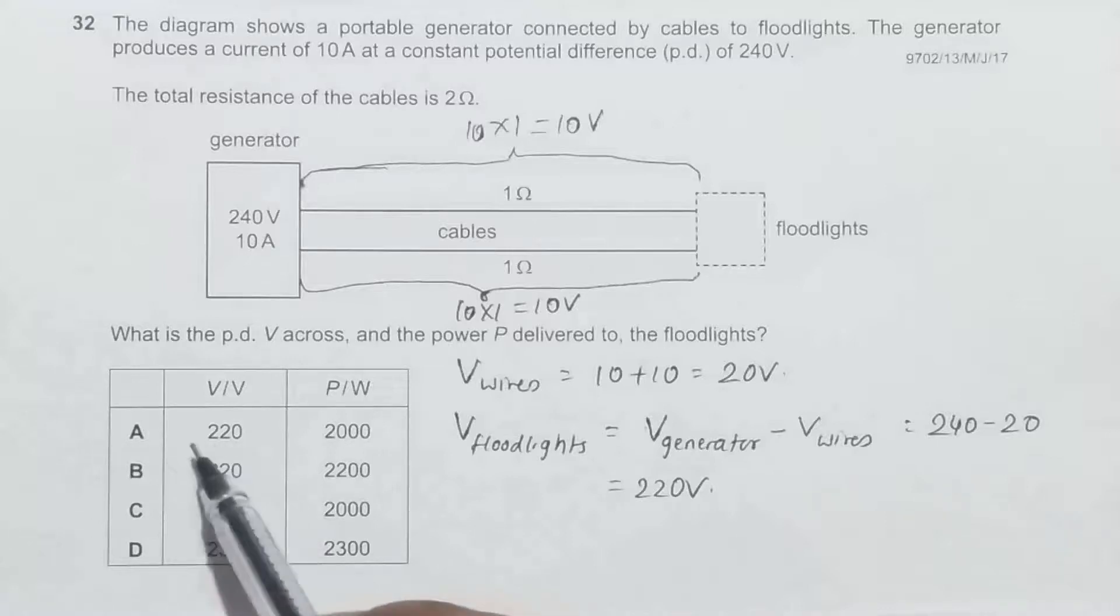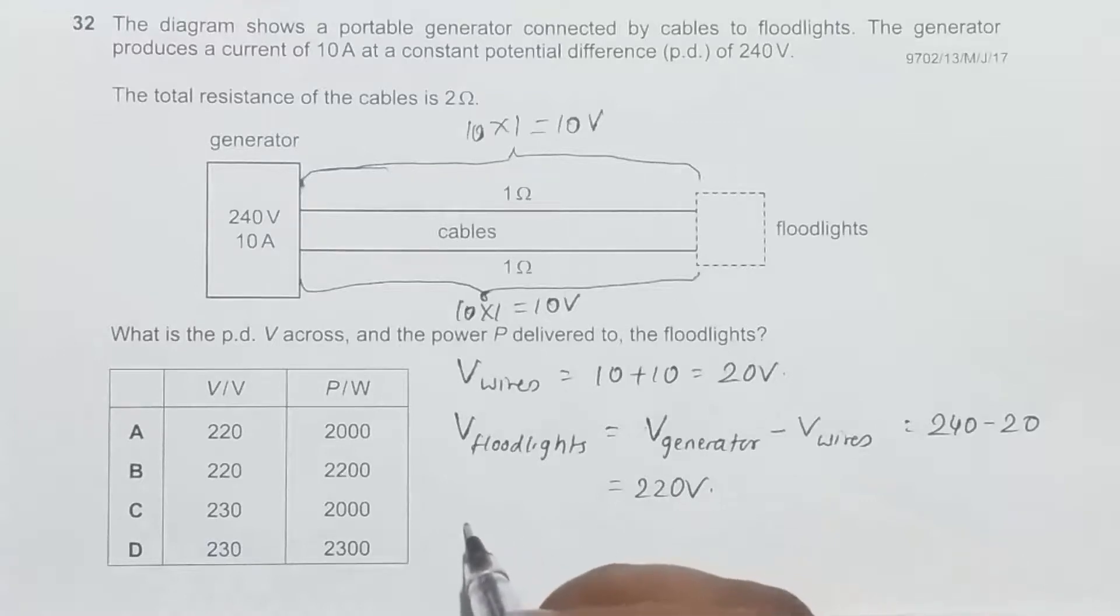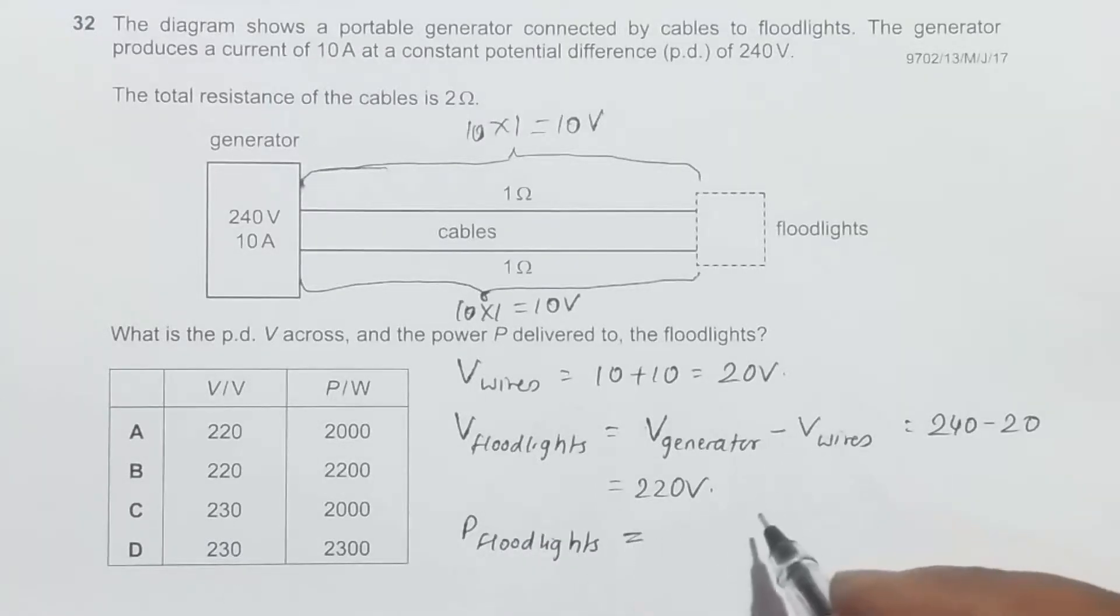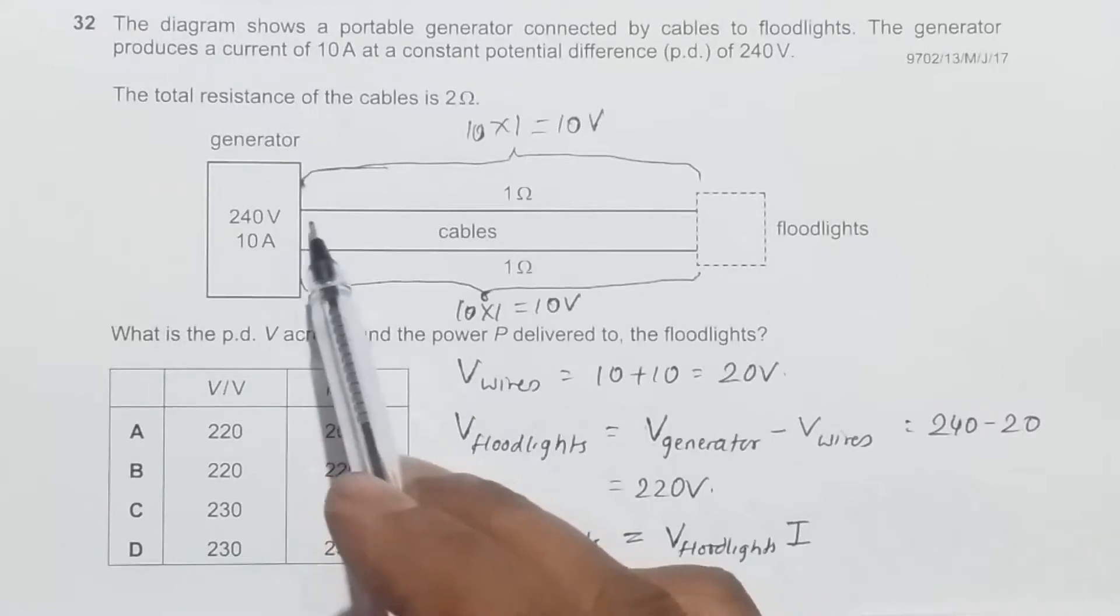If you go to the answer choices, then our answer could be either A or B. Now the power to the floodlights will be equal to V across the floodlights into the current, and the current given by the source is 10 amperes.